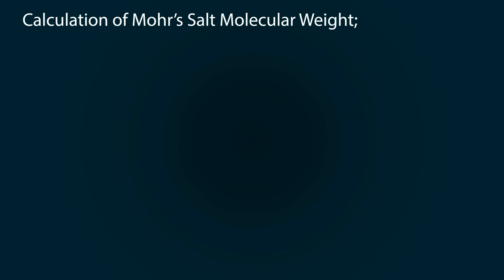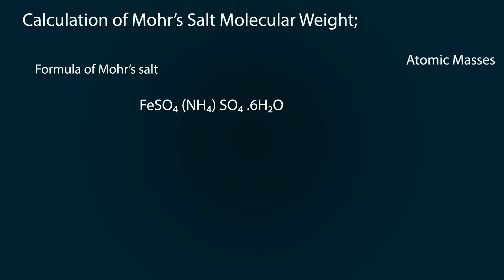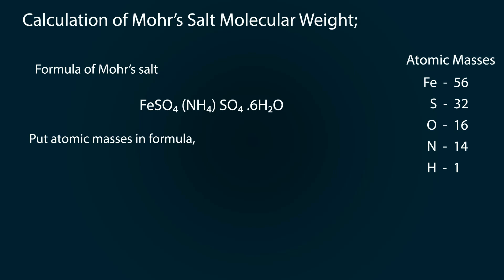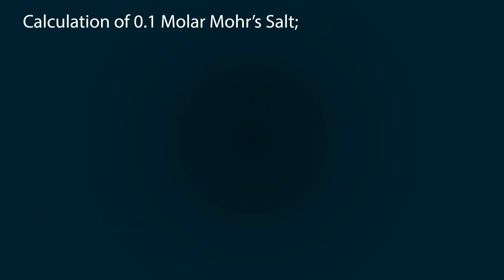We have to calculate the molecular weight of Mohr's salt. The formula of Mohr's salt is FeSO4·(NH4)2SO4·6H2O. The atomic masses are: iron = 56, sulfur = 32, oxygen = 16, nitrogen = 14, hydrogen = 1. Putting these into the formula, the molecular weight of Mohr's salt is 392 grams per mole.